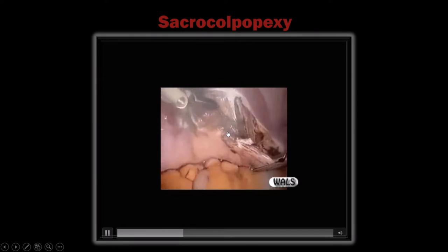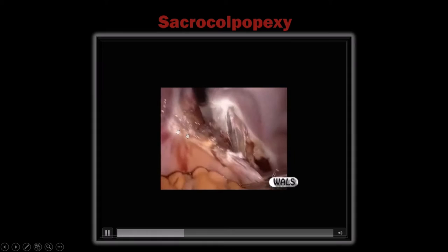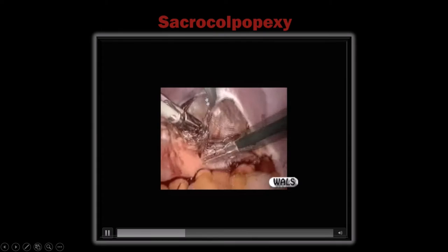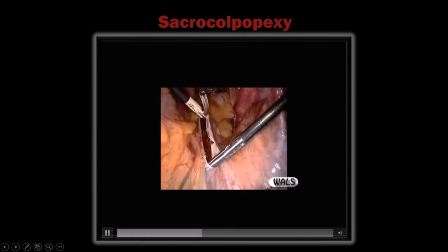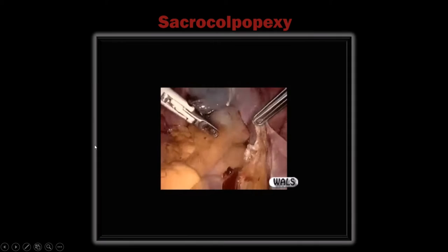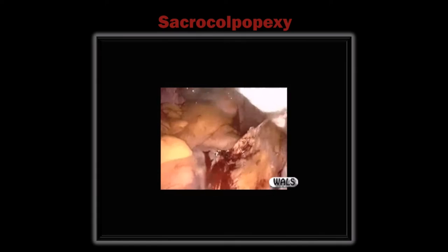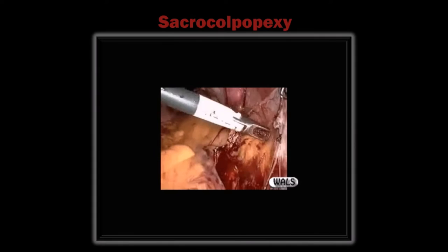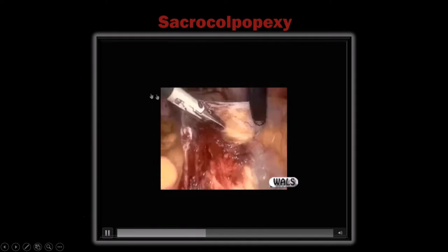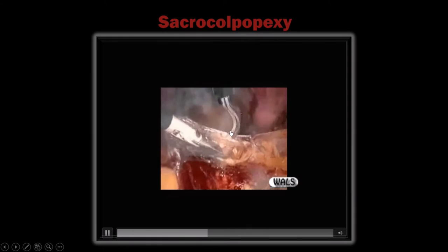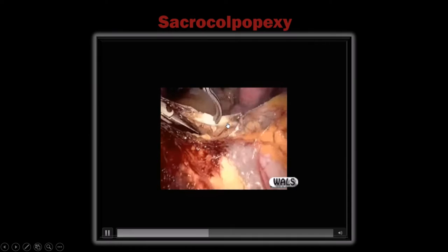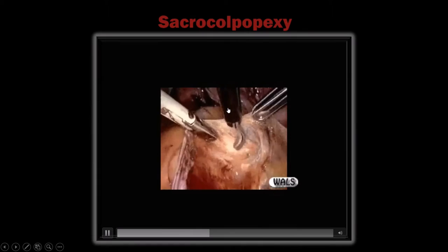Just separate the peritoneum of the posterior cul-de-sac. If there is slight oozing, use the bipolar. A portion of the mesh is placed between the peritoneum and the tissue. Then start cutting the peritoneum of the sacral promontory from the right side of the rectum, reaching up to the cul-de-sac — just like in hysterosacropexy. Only peritoneum is cut, pulled first and then cut. This peritoneal tunnel hides the mesh and is closed by continuous suturing.